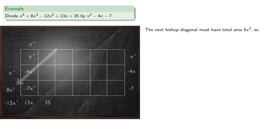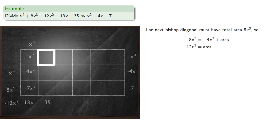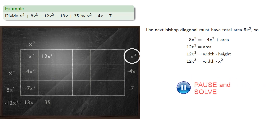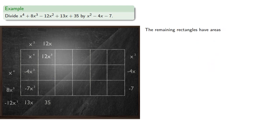The next bishop diagonal must have total area 8x cubed. We know part of that area is negative 4x cubed, and then the area of the remaining rectangle — since area is width times height and we know the height — gives us a width of 12x. Now we know the width of this second column of rectangles, and since we know the heights of the two remaining rectangles in the column, we can find those remaining areas.